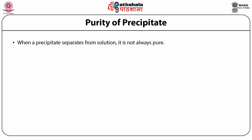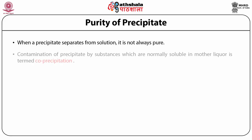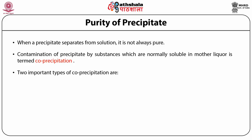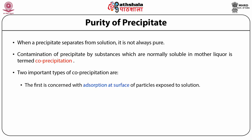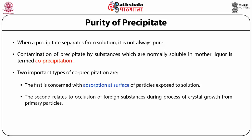When a precipitate separates from a solution, it is not always perfectly pure. It may contain varying amounts of impurities depending on the nature of the precipitate and the conditions of precipitation. The contamination of the precipitate by substances which are normally soluble in the mother liquor is termed co-precipitation. We must distinguish between two important types: surface adsorption at the surface of the particles, and occlusion of foreign substances during crystal growth.